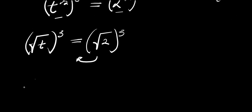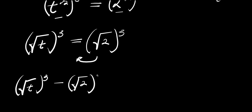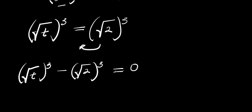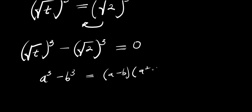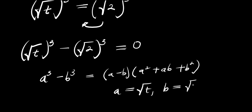We simply have square root of t raised to the power of 3, minus square root of 2 raised to the power of 3, and this equals 0. Now if you have a cubed minus b cubed, this equals a minus b times a squared plus ab plus b squared. In this case, a is square root of t and b is square root of 2.